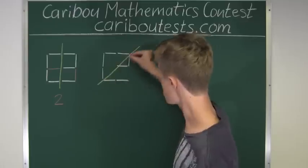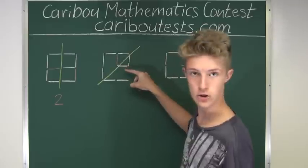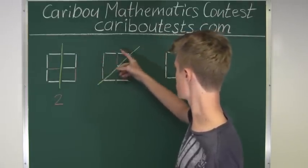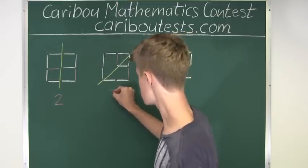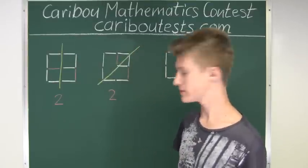To make this a line of symmetry, we would need a match here to mirror this match, and then a match here to mirror this match. Therefore, we need two additional matches again to make this diagonal line a line of symmetry.